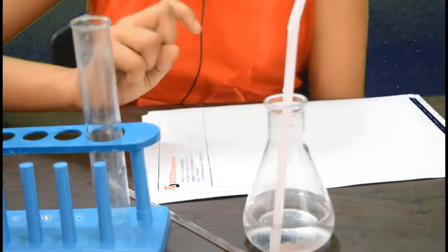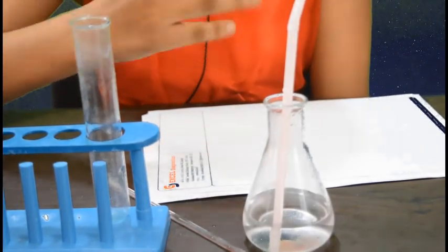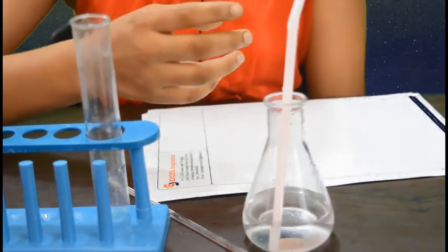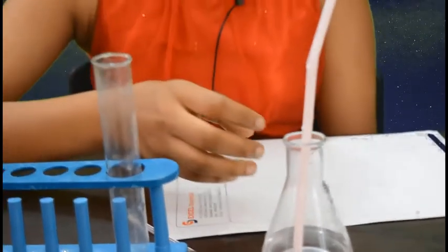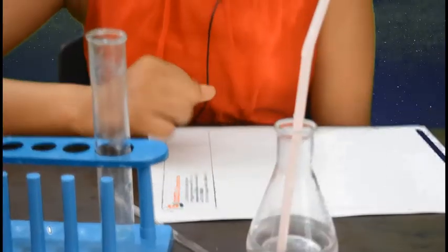The solution turns colorless. This is because when we breathe out we release carbon dioxide. Carbon dioxide reacts with water to form carbonic acid. Carbonic acid is acidic in nature. When phenophthalein mixes with acidic solution it forms a colorless solution.